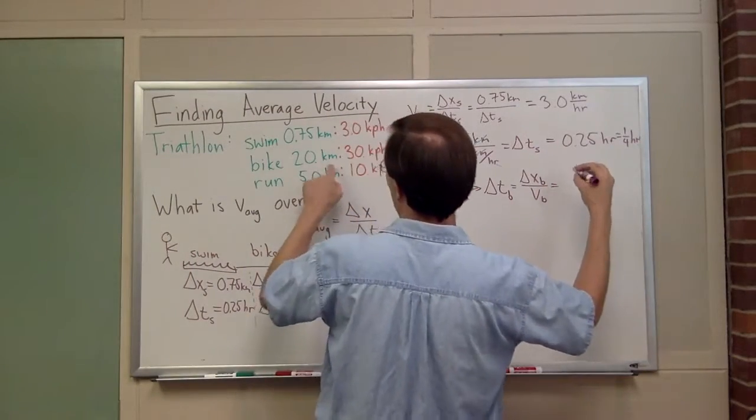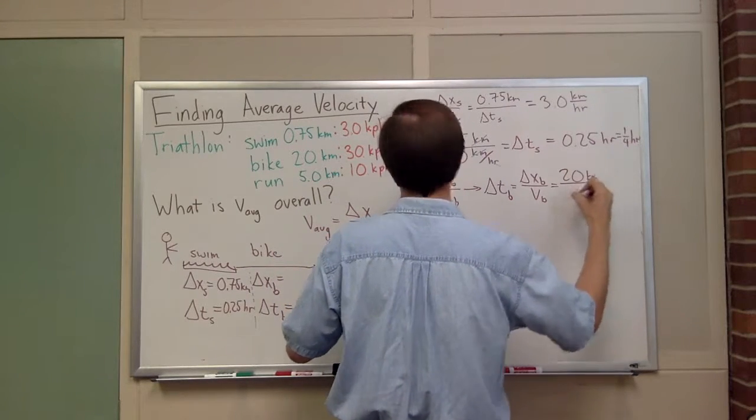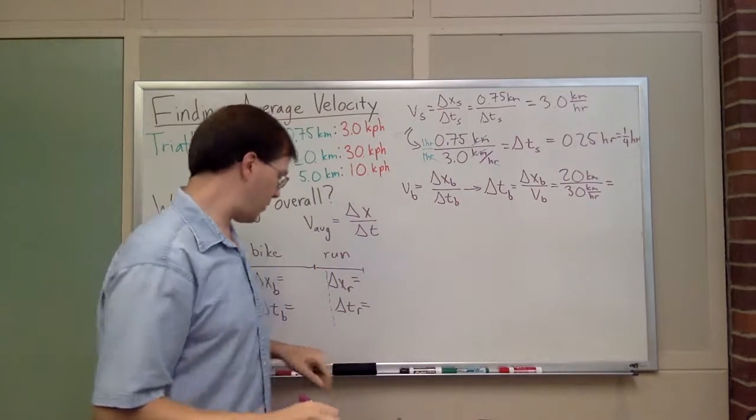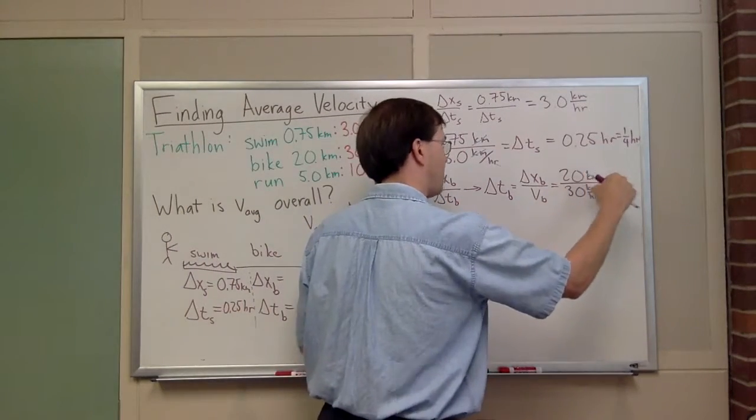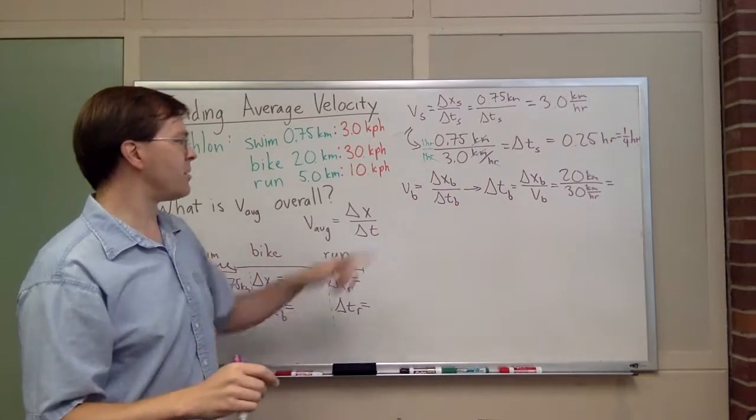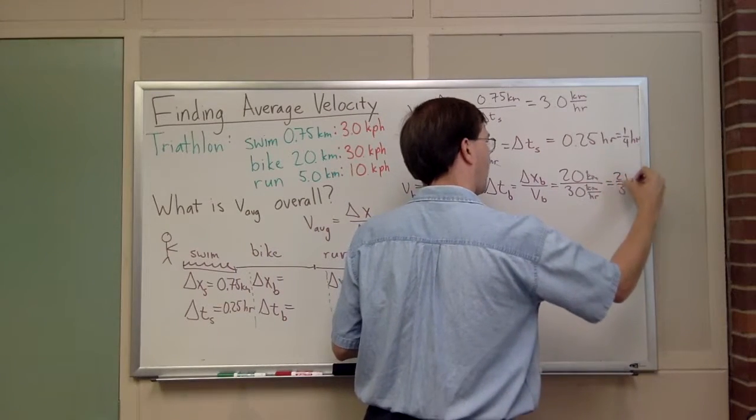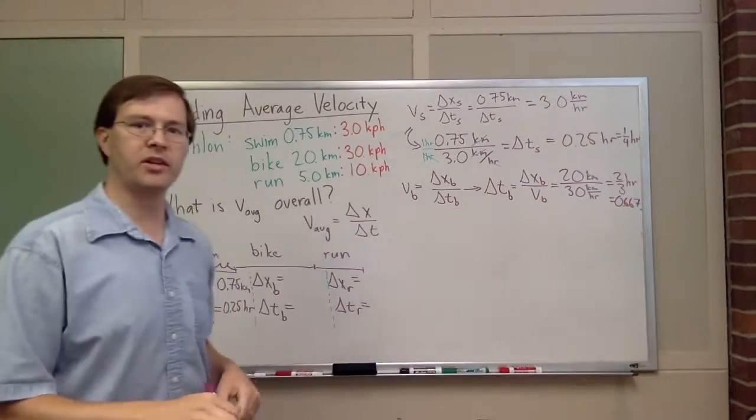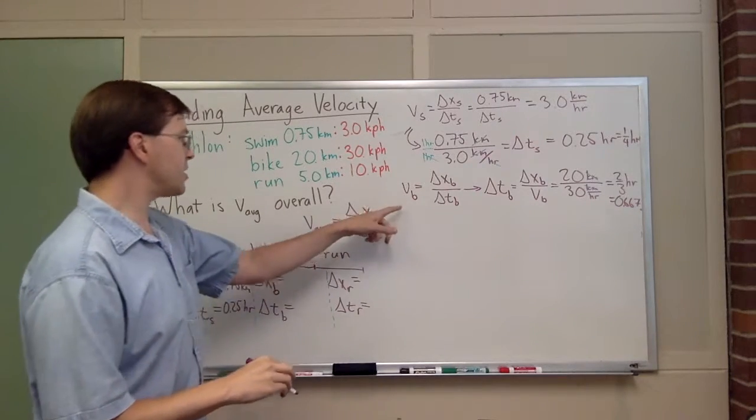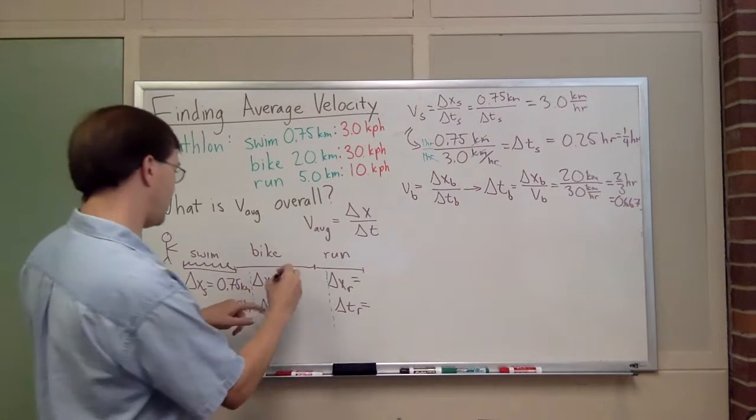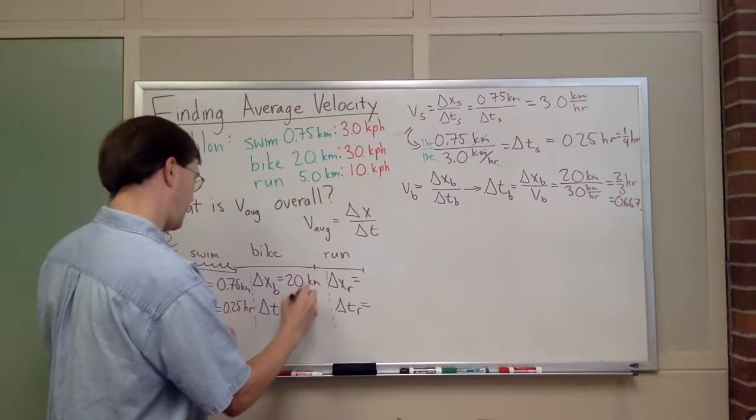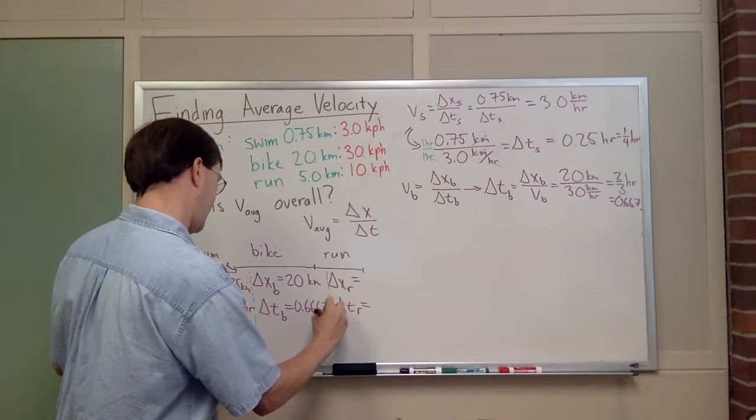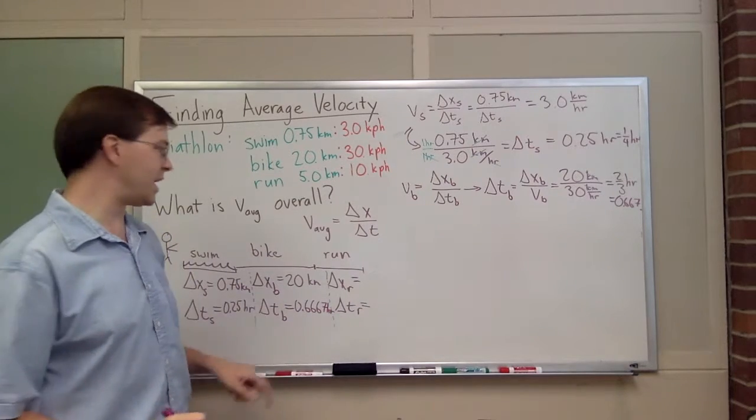I do this: delta x bike was 20 kilometers divided by 30 kilometers per hour. The units are going to work out the same way they did before. The kilometers cancel out top and bottom, the hours will come out to be hours on top. That's just two-thirds of an hour, or 0.667 rounding to three decimal places. That's my delta t for the bike stage. My delta x bike was 20 kilometers, and my delta t bike was 0.6667 hours.